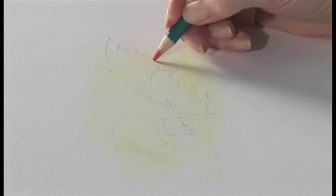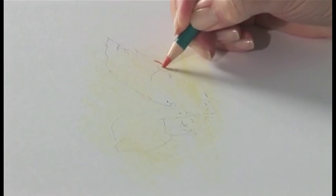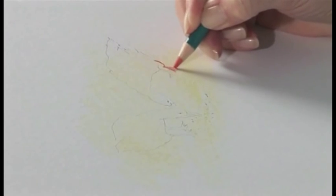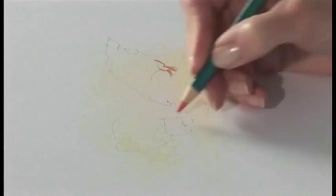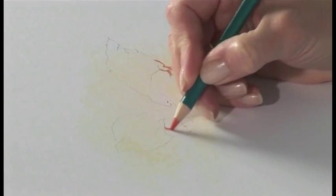So we're using the point of the pencil now and we're going to press a little bit more firmly. The yellow acts as a base for us and the orange is a nice firm color.